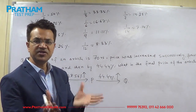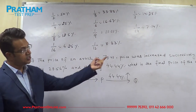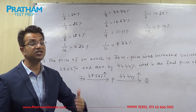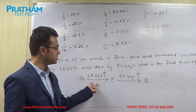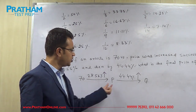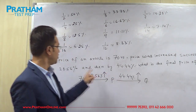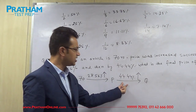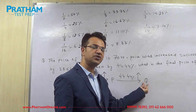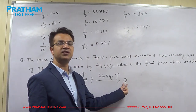The conventional way to solve this: the price is 70 rupees, and since the word 'successively' is used, the price is not increased at one time — it is increased one after the other. The first increment of 28.56 percent is applied, and after increasing the price by 28.56 percent we arrive at a price called P. On this price P, the second increment of 44.44 percent is applied, giving us the final price Q, which is what we want to find.